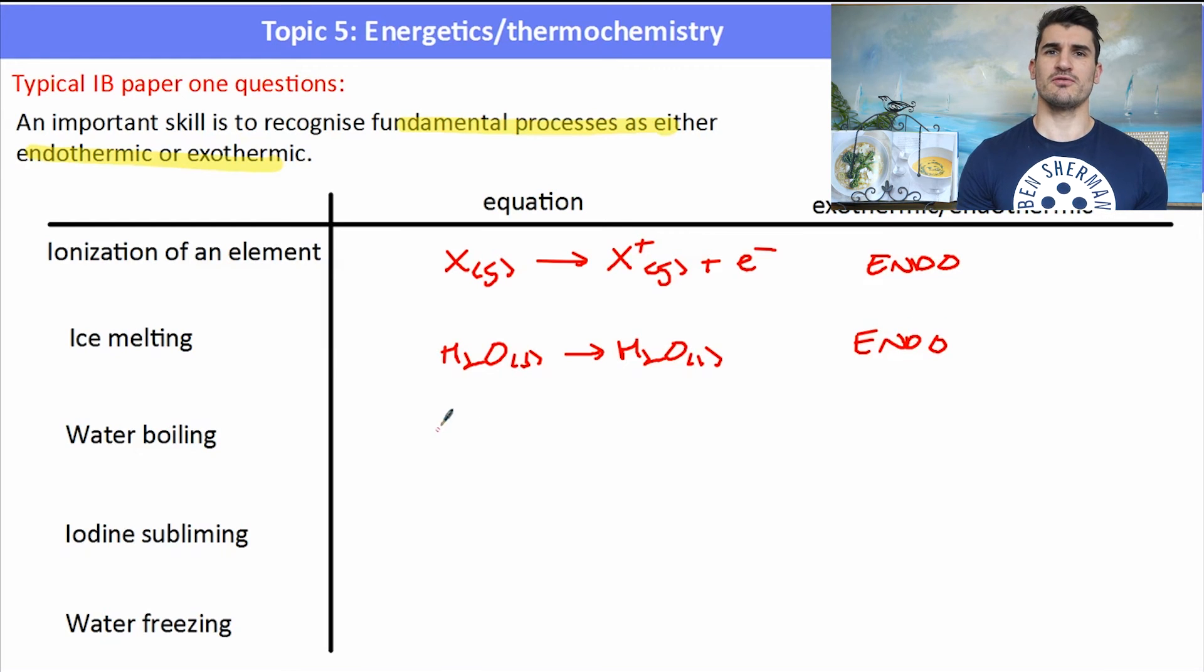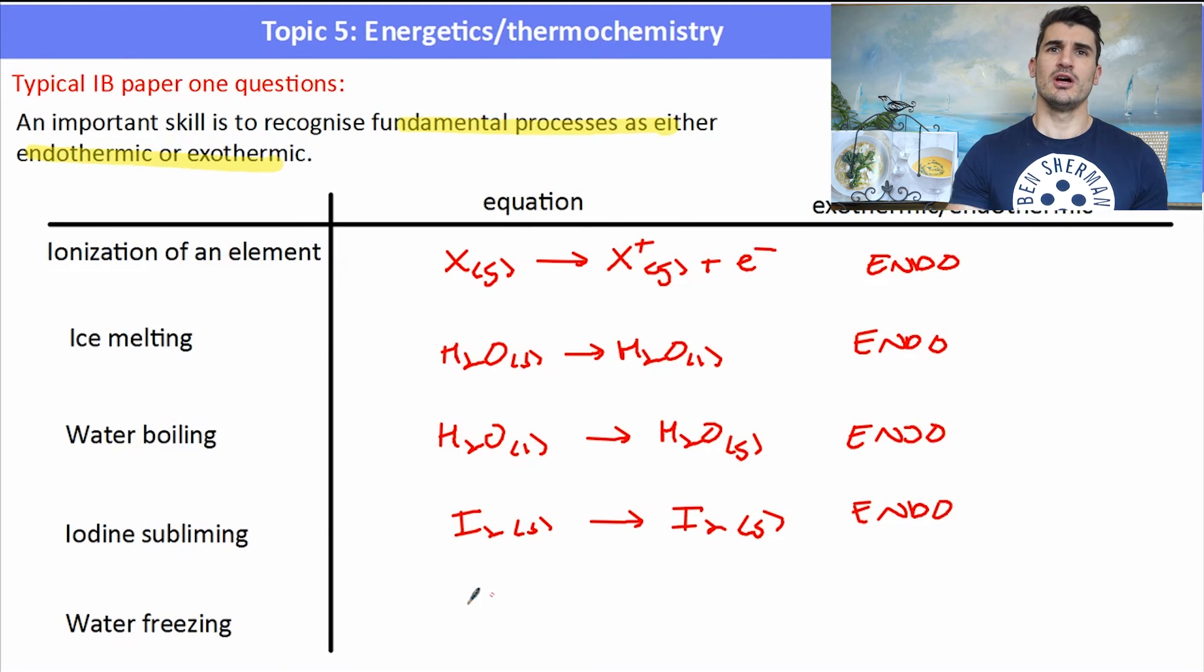If we're boiling water, we're turning it from a liquid to a gas. We're breaking the hydrogen bonds. Again, it must absorb energy. Endothermic. If we have the subliming of iodine going from a solid to a gas, again, it's got to absorb energy. It's endothermic. If we want to freeze water though, we want to go from a liquid to a solid. So what we actually have to do is release some of our energy. So that would be an exothermic process.